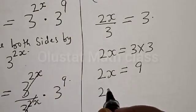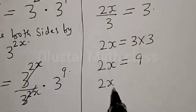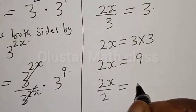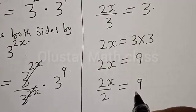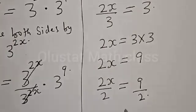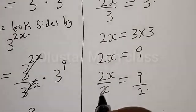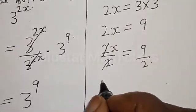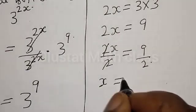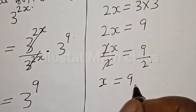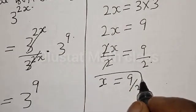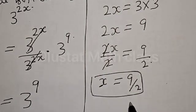Let's cross multiply: 2s is equal to 9. Dividing both sides by 2, we get s is equal to 9 divided by 2. That is our final answer.